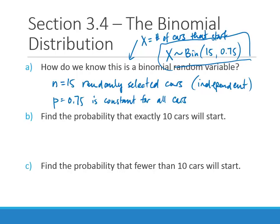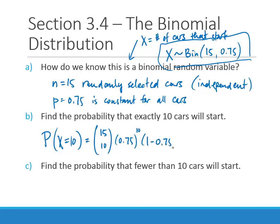Part B: the probability that exactly 10 cars will start — that's P(X=10). Using the PMF: 15 choose 10, times 0.75 to the 10th power, times 0.25 to the fifth power. If you calculate that out, you get 0.1651 — about a 16.5% chance that exactly 10 of those cars will start.